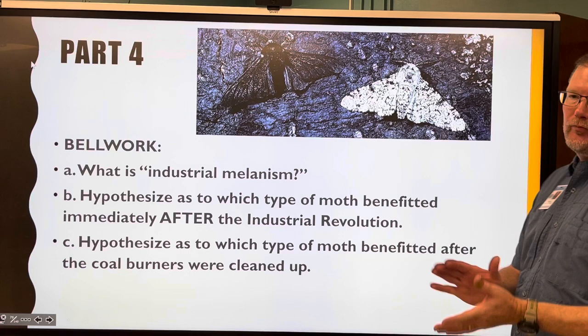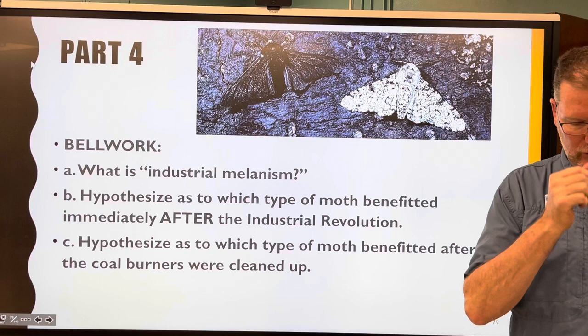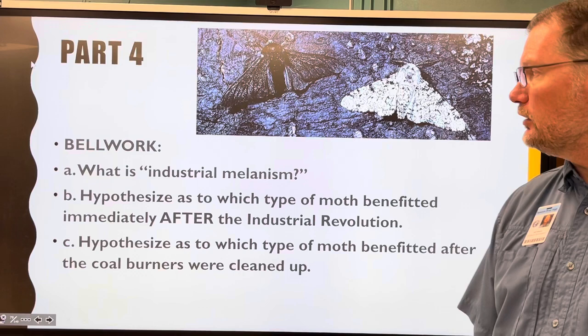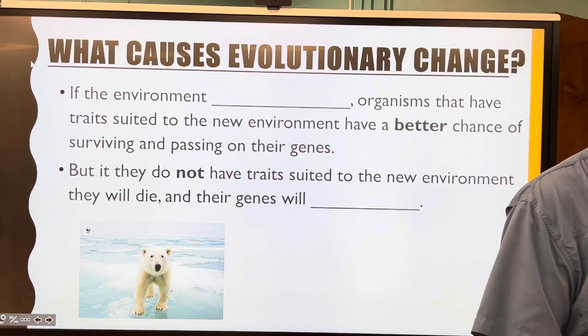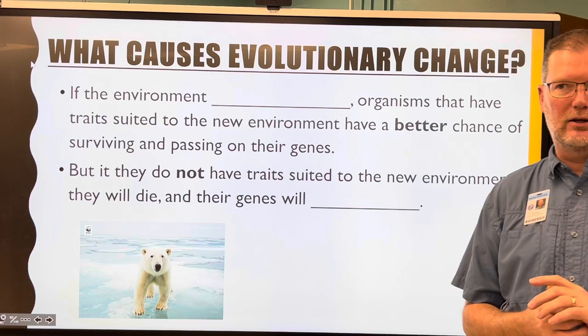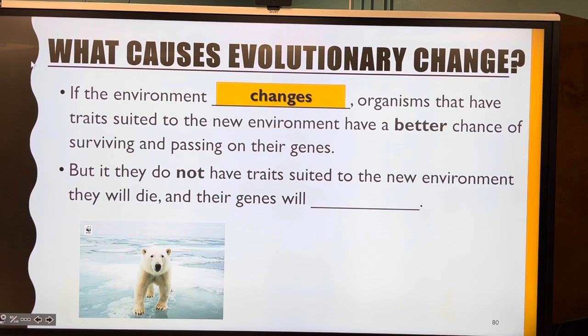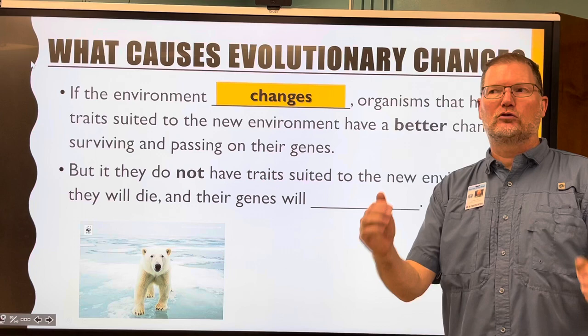You are pretty well versed now on industrial melanism — this should have been pretty easy after the activity and the previous set of notes. So let's move on. What causes evolutionary change? Now we've had some introduction to this. You may be thinking things like habitat changing, climate changing, and that's good. So let's build on that. If the environment changes, like global warming for example, we know this happens.